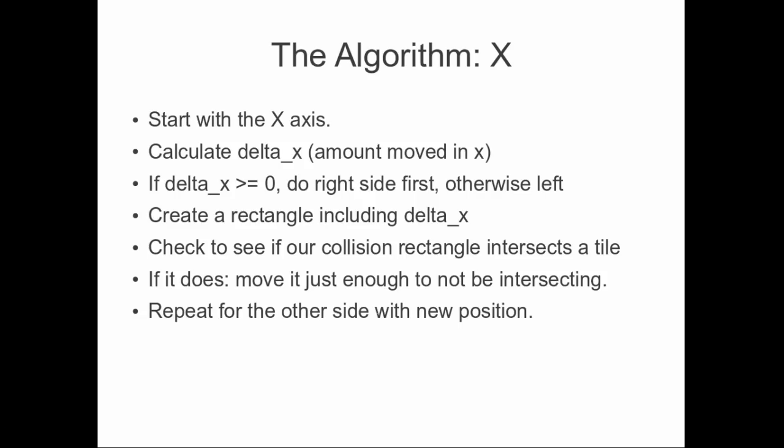Let's start with the algorithm for the X direction. We always start with the X axis — when we add slopes later, it'll be easier and we'll find out why then. The first thing we do is calculate our delta X, which is the amount we want to move in X. This is just velocity X times time, and we're already calculating this, so that part's done.